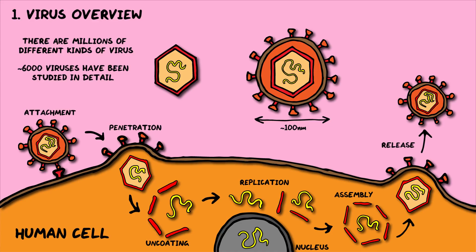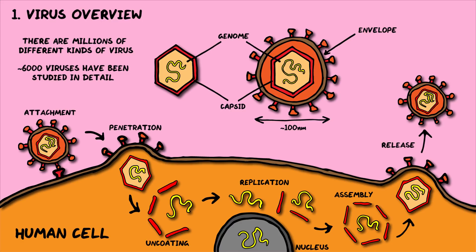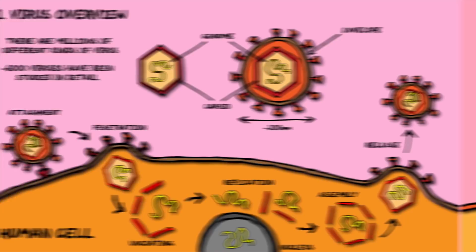With that in mind, viruses always contain a genome — the instructions for making more viruses — and a protective shell made of proteins called a capsid, which keeps the virus safe and helps it stick to and enter the cells they're invading. Some viruses are also coated in an envelope, a greasy cover taken from the membrane of the last cell they infected.